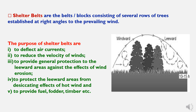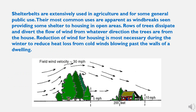Wind shelter belts are belts or blocks consisting of several rows of trees established at right angles to the prevailing wind. The purposes of shelter belts are: first, to deflect air currents; second, to reduce the velocity of winds; third, to provide general protection to leeward areas against wind erosion; fourth, to protect leeward areas from desiccating effects of hot winds; and fifth, to provide fuel, fodder, timber, etc. Shelter belts are extensively used in agriculture.